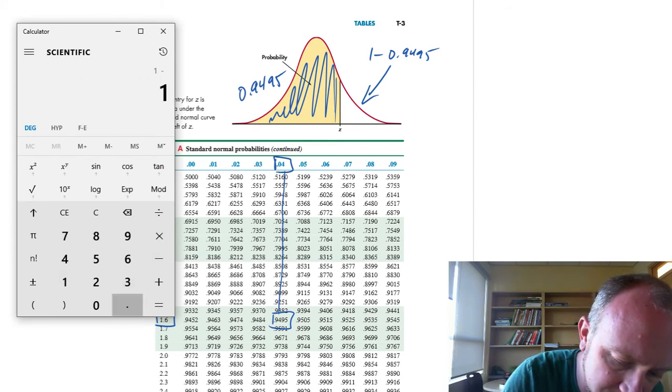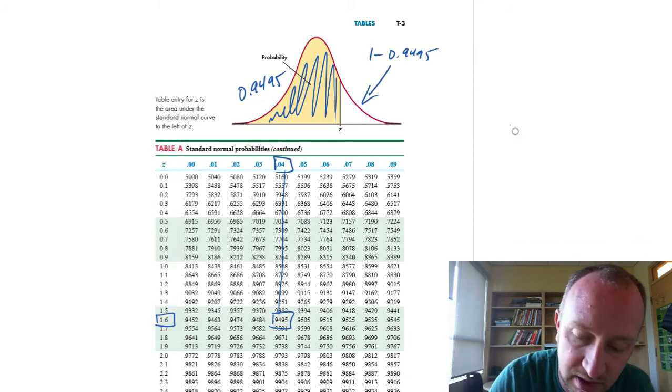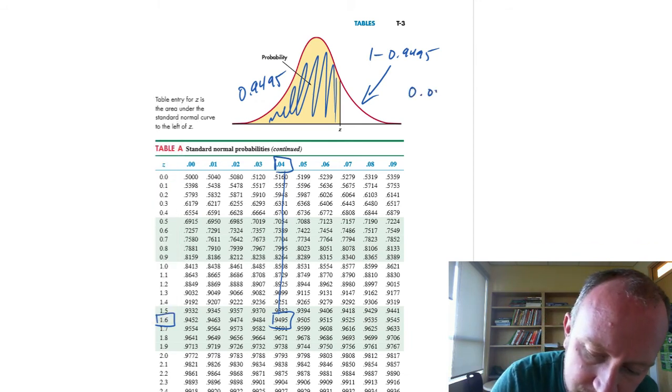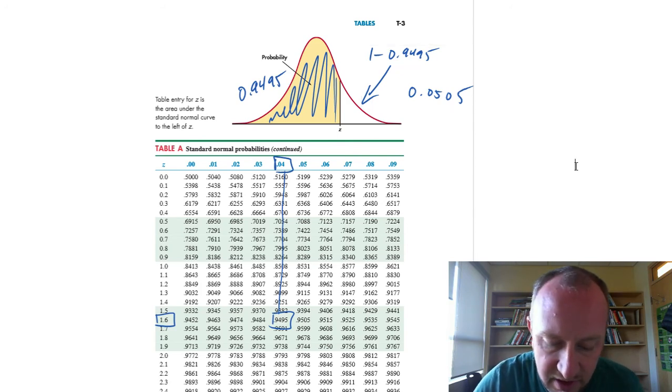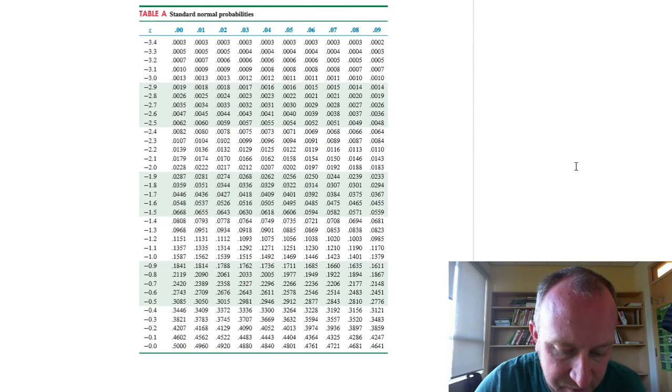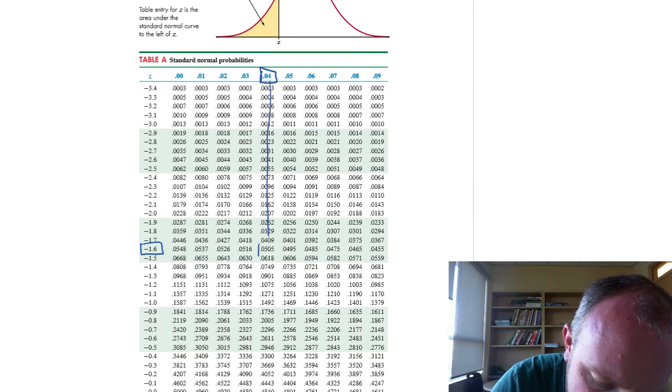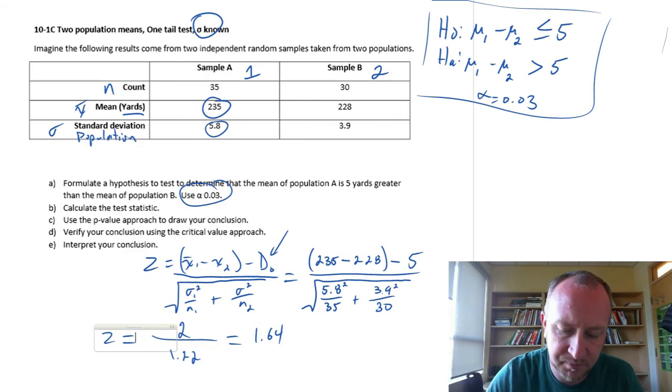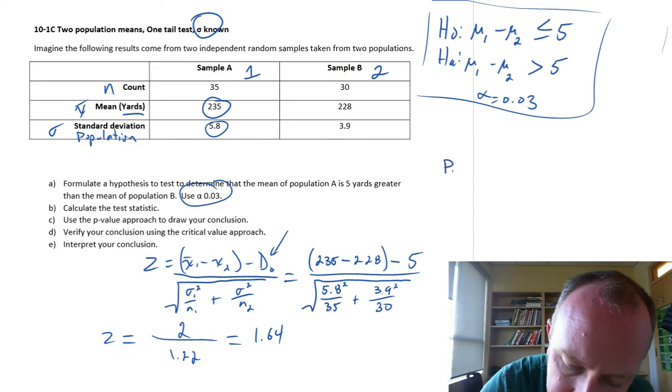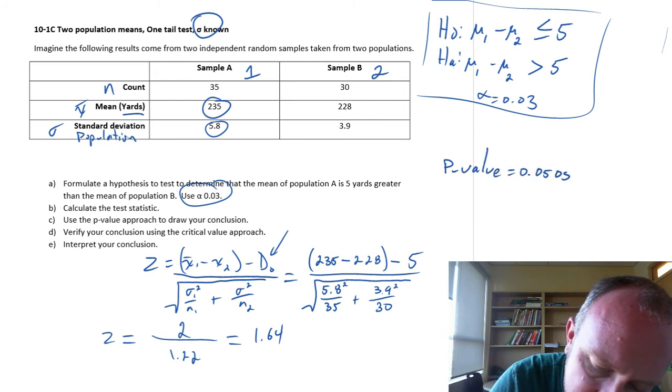And so once again, 1 minus 0.9495, 0.0505. And then if we went just to verify and look at our negative side, I have 1.64, and there we are, 0.0505, just as we would expect. So we have a p-value, our p-value is 0.0505.